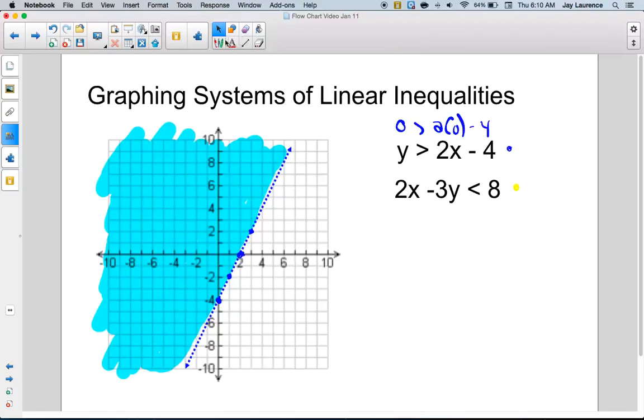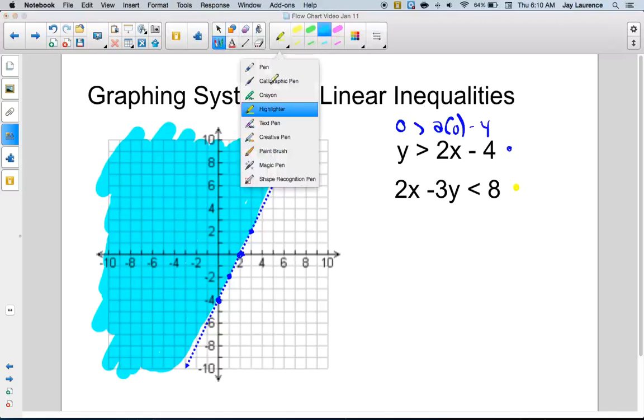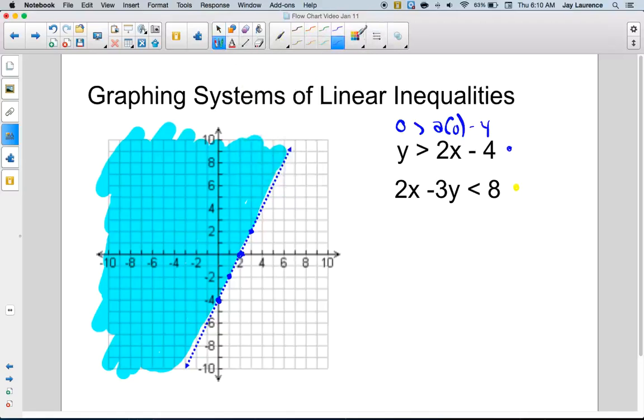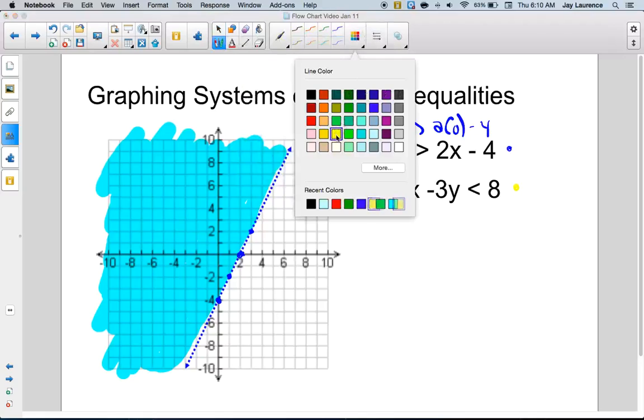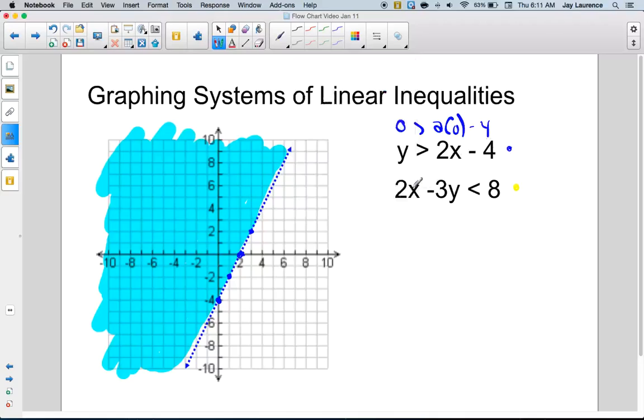Now, let's do the second part of the system. Looks like we're in standard form on this one. And so, I'm going to use my x-intercept, which I think is gonna be four, right? Because of c over a. All right, and my slope is gonna be a positive two-thirds. So, I'm gonna go one, two, one, two, three. One, two, one, two, three.